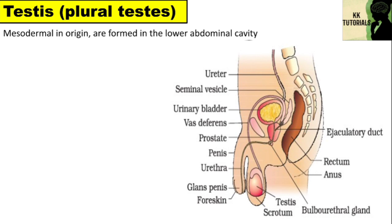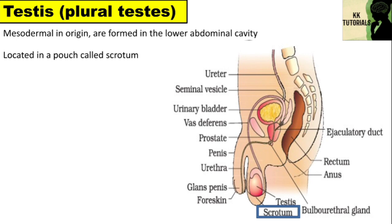The testes are located in a pouch called the scrotum. During early fetal life, the testes develop in the abdominal cavity and later they descend into the scrotal sac through a passage called the inguinal canal.